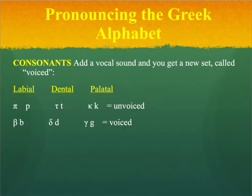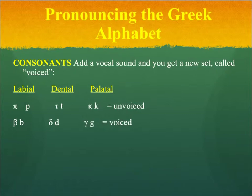Those three basic sounds are called the unvoiced versions of the labial, dental, and palatal consonants. But if you add a little voice to them, you get the voiced versions, and those are indicated by the letters Beta, Delta, and Gamma, pronounced B, D, and G. So those differ from the unvoiced: P versus B — you can hear the voice there — T versus D, and K versus G.